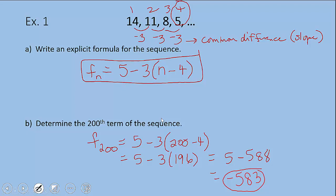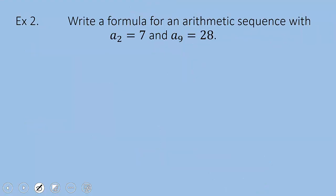Let's finish it up with one more question. This time we're going to write the formula for an arithmetic sequence but we don't have the consecutive values of an entire sequence. We know that the second term is seven and that the ninth term is 28.